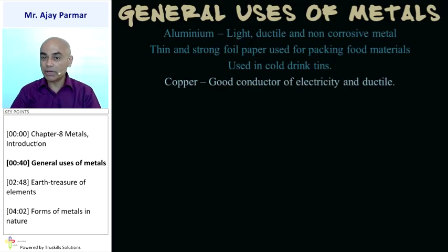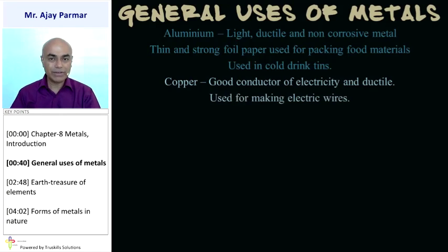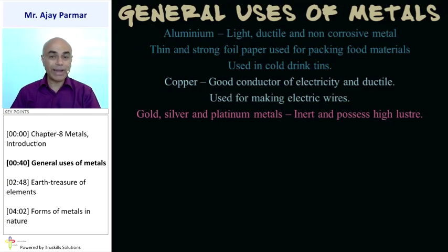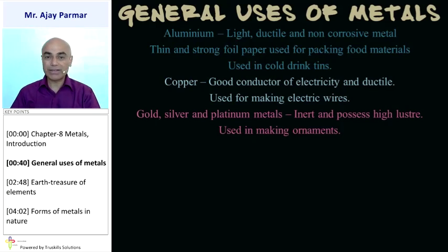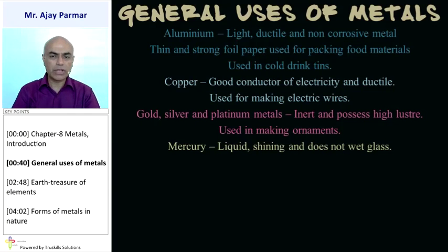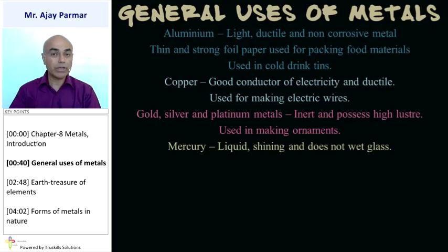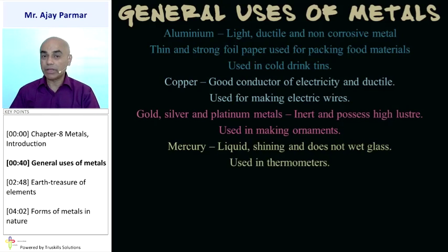Copper is a good conductor of electricity — extremely good conductor in its pure form. It is also ductile, and because of that reason, we make use of copper for making electrical wires. Gold, silver, and platinum are very inert metals with very high luster, and obviously very precious metals; because of that they are used in making ornaments. Mercury, as you know, is the only liquid metal at room temperature. It is shining and does not wet glass, and because of that reason we make use of mercury in making thermometers.